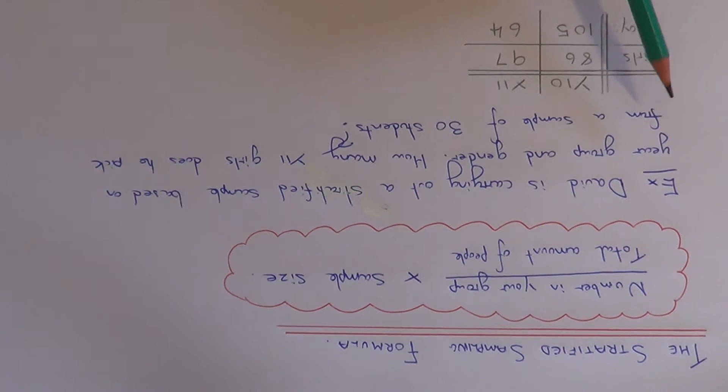So let's have a look at the example here. David is carrying out a stratified sample based on year group and gender. How many Year 11 girls does he pick from a sample of 30 students?